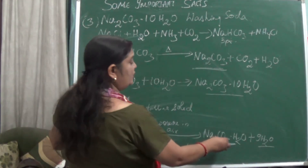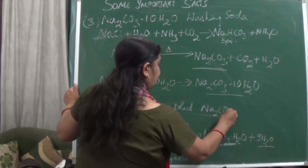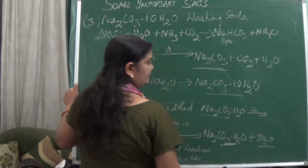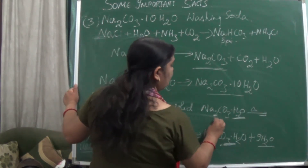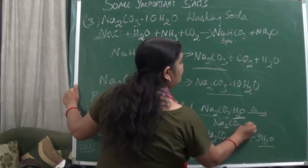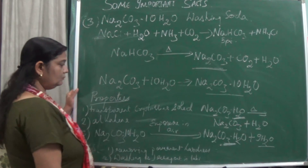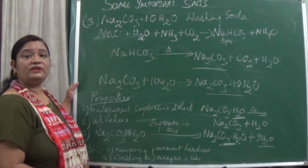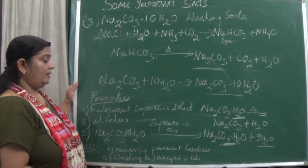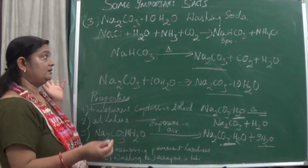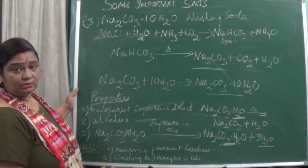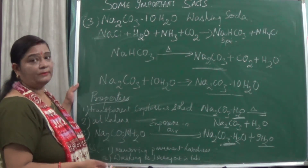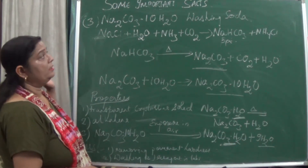If Na2CO3·H2O is further heated, that one remaining water molecule is also released out, giving Na2CO3 and H2O. The uses of washing soda include removing the permanent hardness of water, making it useful for washing clothes. It is also used as a reagent in laboratories, and in textile industries and petroleum industries.